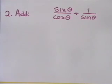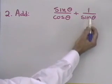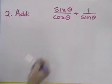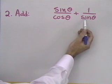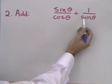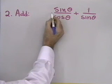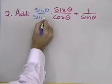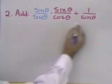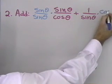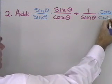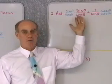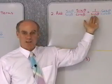For problem number 2, we want to add sin θ over cos θ and 1 over sin θ. I'm going to treat these expressions just like I would in algebra. If I'm going to add two fractions, I need a least common denominator. The LCD will be cos θ times sin θ. I'll multiply the first fraction by sin θ over sin θ, and the second fraction by cos θ over cos θ.